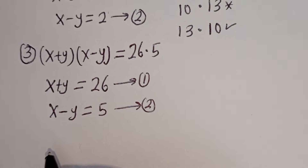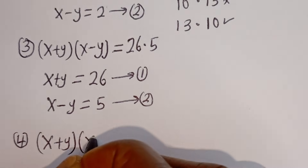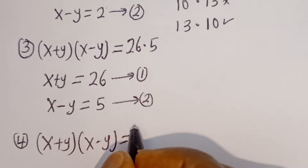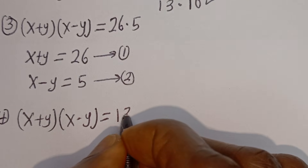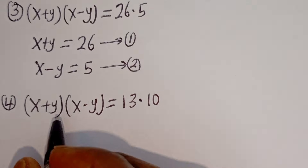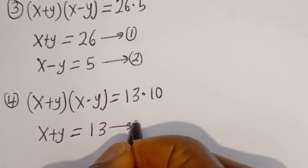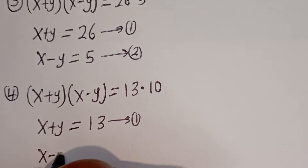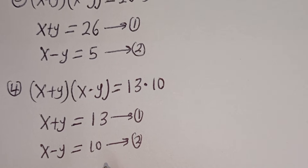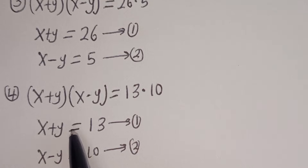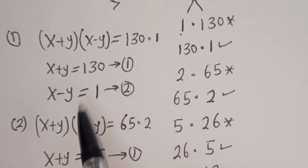For the fourth case, (X + Y)(X − Y) = 13 × 10. The equations are: equation 1: X + Y = 13, and equation 2: X − Y = 10. We now have four different simultaneous equation systems — the fourth, third, second, and first cases — which we can solve.